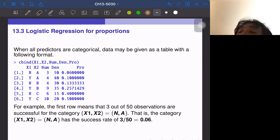Hi, the next section 13.3 logistic regression for proportions. So this is another type of logistic regression, essentially the same, but data look different.